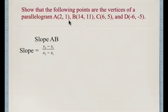x1 is 2. So we sub into the equation, so 11 minus 1 and 14 minus 2, and make sure you get the order correct, and that simplifies to be 10 over 12, which reduces to 5 over 6. Now looking at CD,